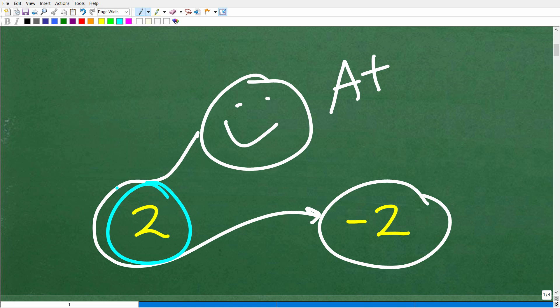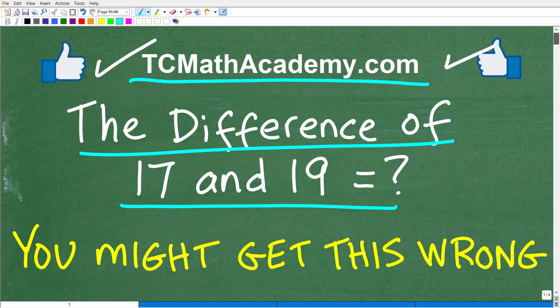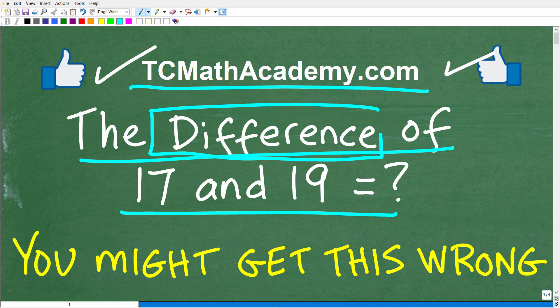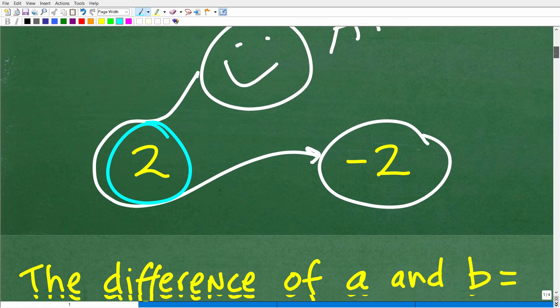But don't feel bad because a lot of people said 2. And if you said 2, again, that's a very common error because the error here is that people don't really understand the actual definition of difference. They have a sense of what that word means, but there's actually a specific mathematical definition. And matter of fact, let me go ahead and show it to you right now.